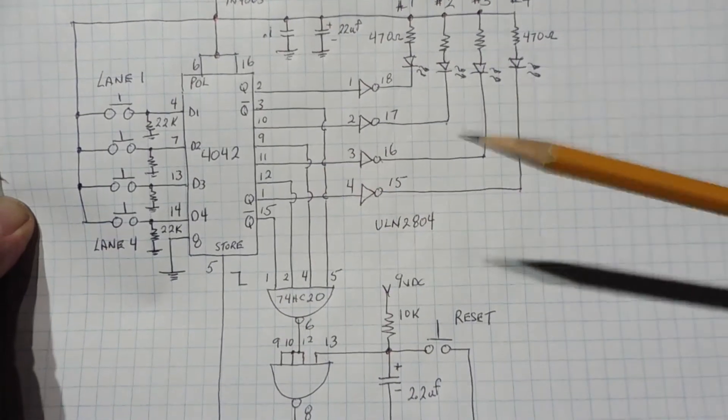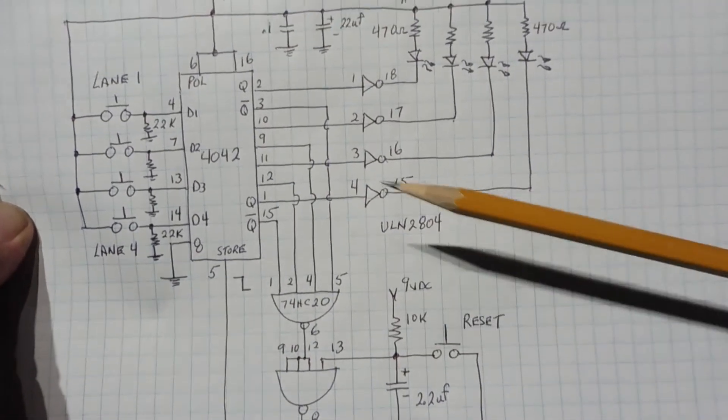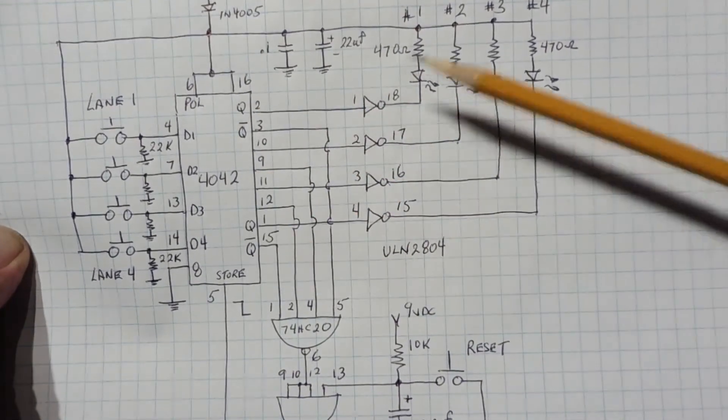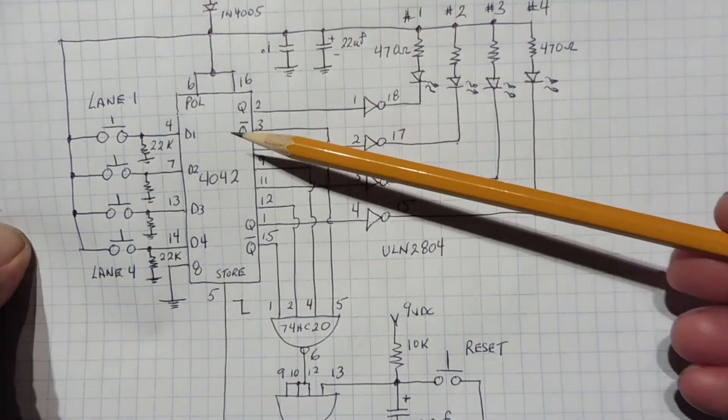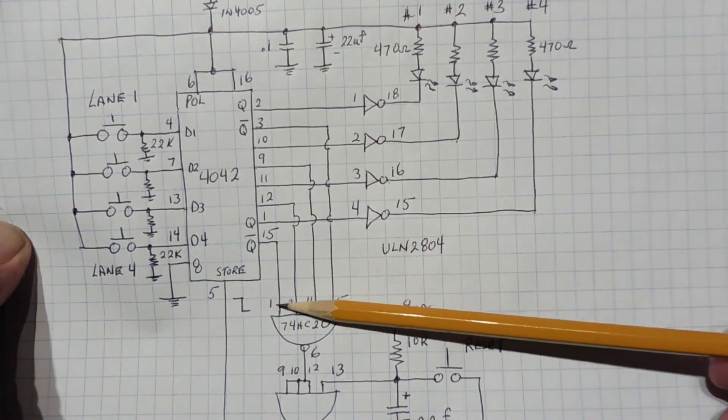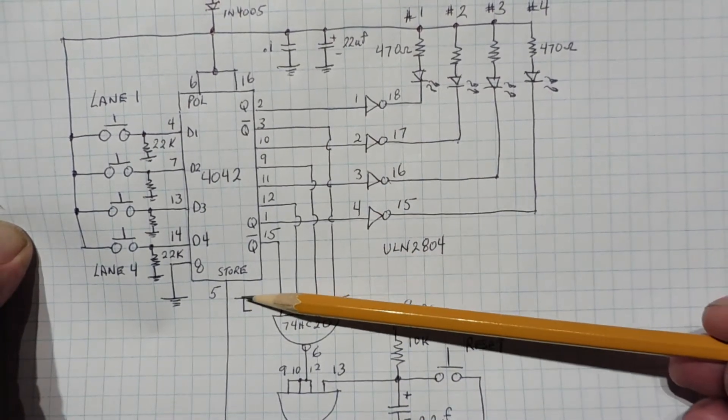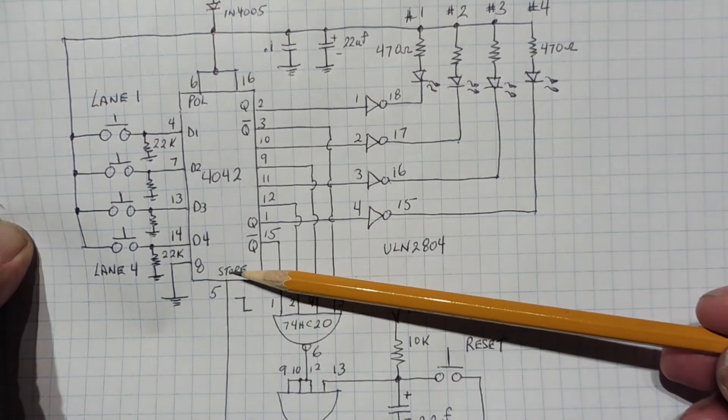So before we start the race, we hit the reset button, so all the Q outputs will be low, all the LEDs will be off, and all the Q-bar outputs will be high, feeding the NAND gate, and we'll have a high on the store pin, pin 5 of the quad D flip-flop.